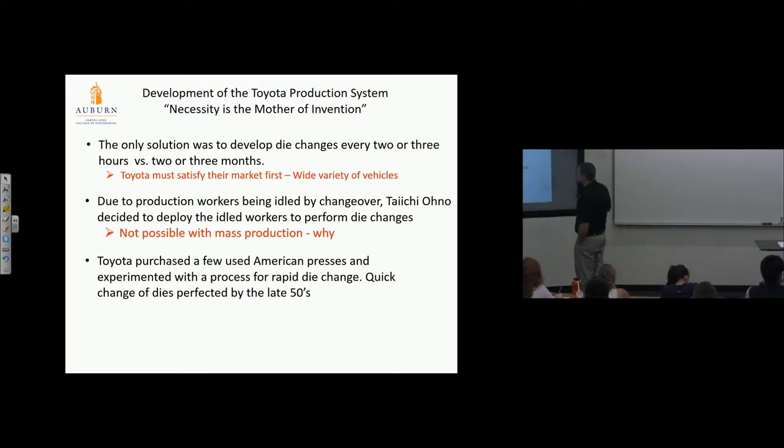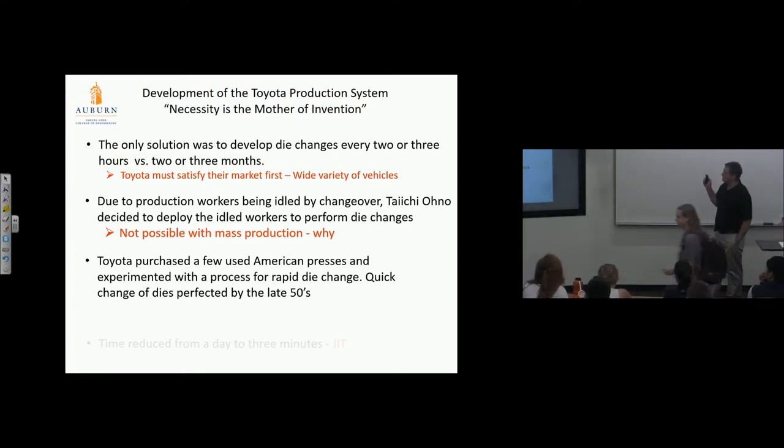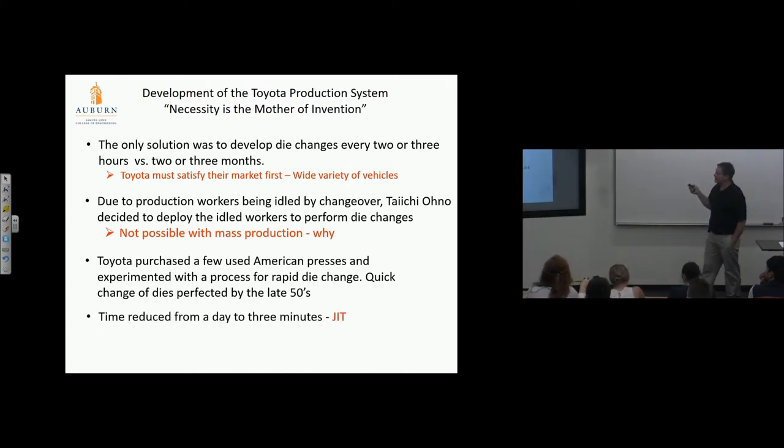Toyota purchased a few used American presses and experimented with rapid die change. Quick change of dies was perfected in the late 1980s—time reduced from a day to three minutes. Imagine that—a day to three minutes to change a die. A lot of engineering, a lot of thought, a lot of creativity. Shigeo Shingo was really the guy who pushed that concept and helped Taiichi Ono implement it.